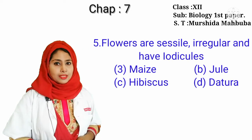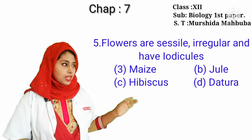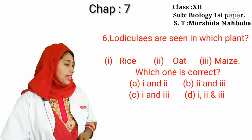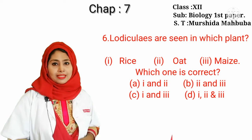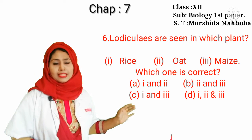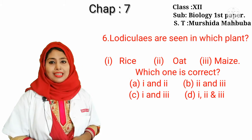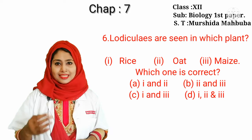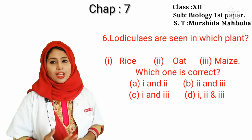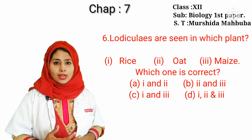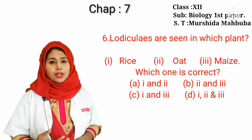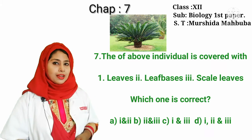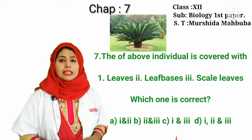If you memorize the characteristics of Poaceae and Malvaceae and their economic importance, you can answer this question. The correct answer is maize. Our next question: lodicules are seen in which plant? The correct answers are rice and oat — all are correct, so the correct answer is D.